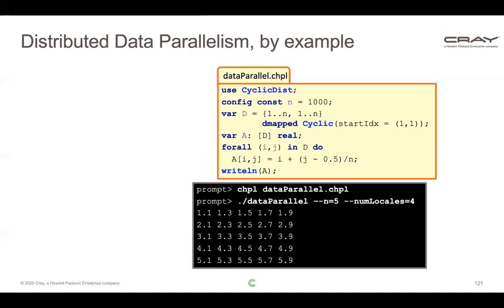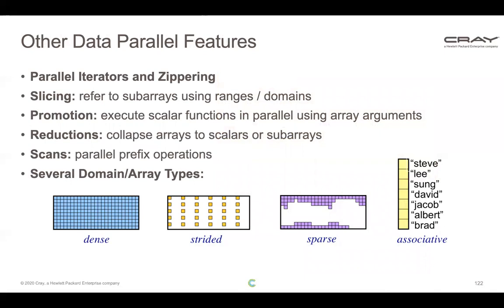That's a quick introduction to data parallelism in Chapel. There are many other data parallel features: writing your own parallel iterators, zippered array iteration, slicing arrays with ranges and domains, promoting scalar functions to parallel array operations, computing reductions and scans on arrays. Chapel also has strided, sparse, and associative domains and arrays — where you can index using arbitrary values like strings. Again, lots more features here that we don't have time to cover today.